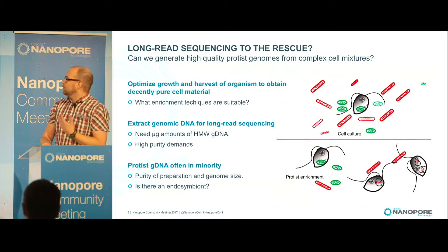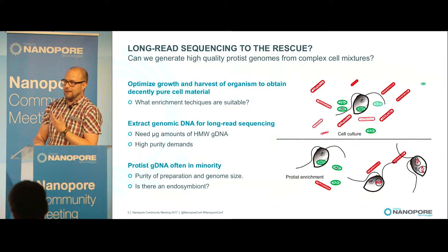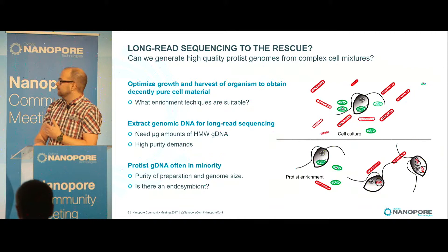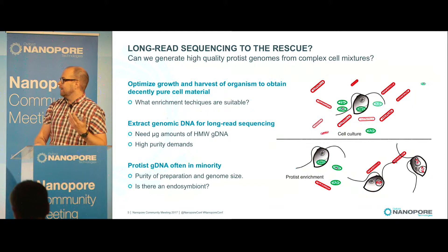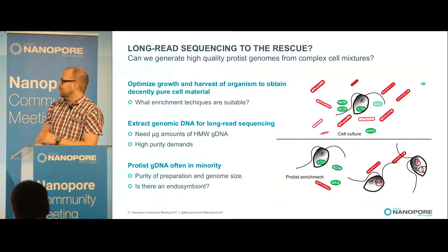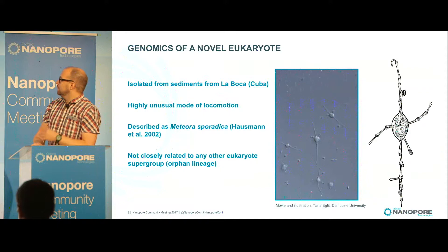Our question was: can we use long-read sequencing, and especially MinION-based sequencing, to get protist genomes that are relatively complete from complex cell mixtures? The organisms we work with cannot be separated from bacteria — they eat bacteria and sometimes need bacteria to live, as they are mostly anaerobes. Our challenge is to optimize growth and harvest of organisms to get pure cell material, extract DNA which does not degrade immediately, and get enough of it at high purity so that it sequences well on the MinION. We also need to consider purity of preparation, genome size, and whether there is an endosymbiont prominent in the sample.